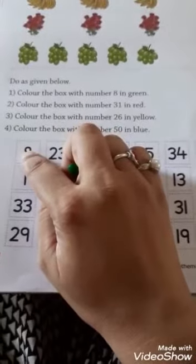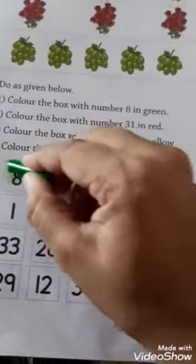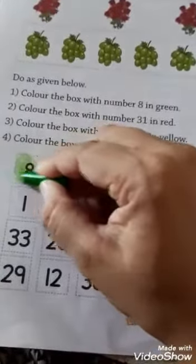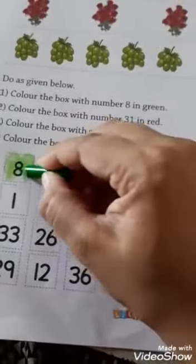So kids, where is the 8? Where is the number 8? Where is the number 8 kids? Here it is. So color the box with the number 8 in green. So we can color like this.